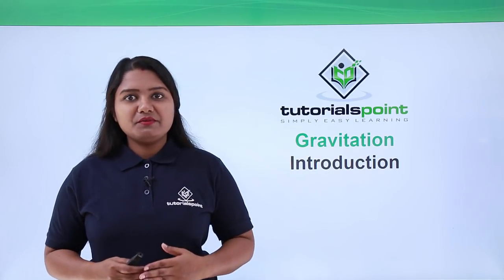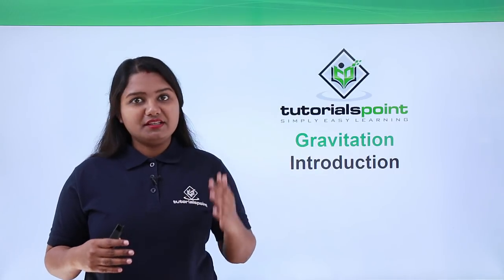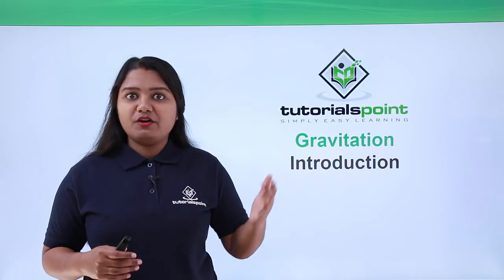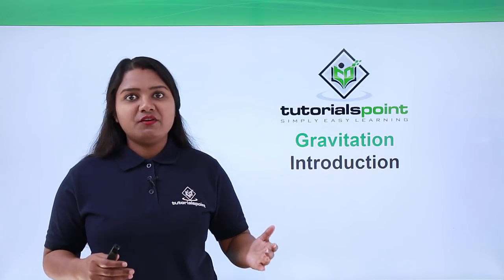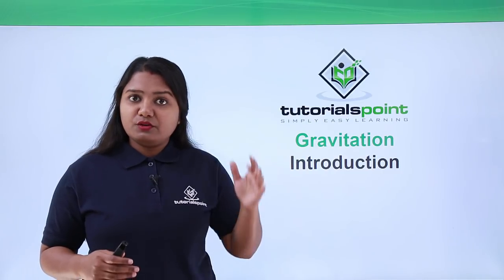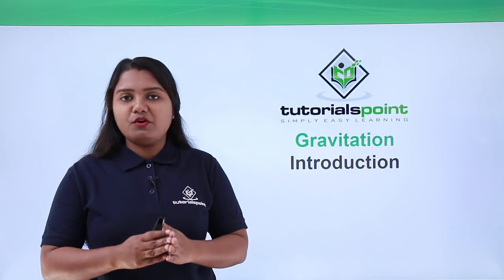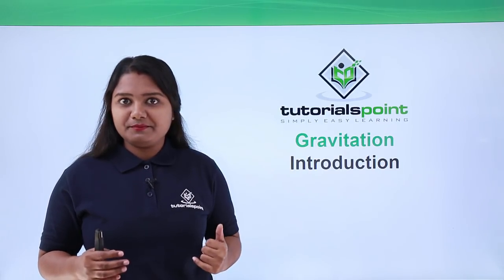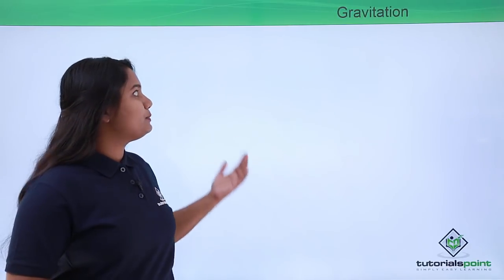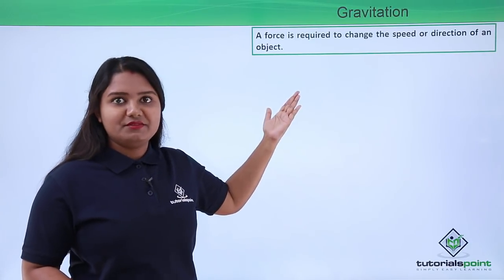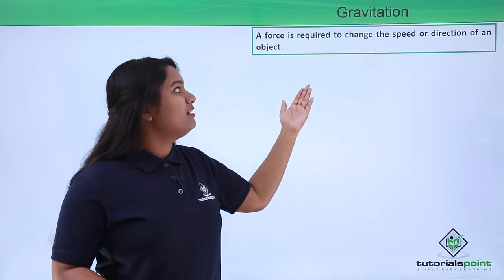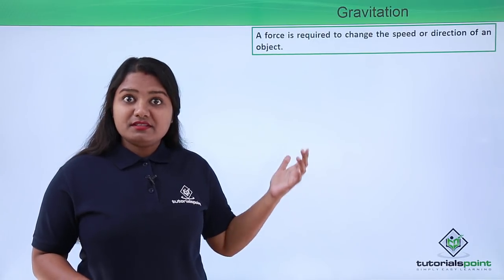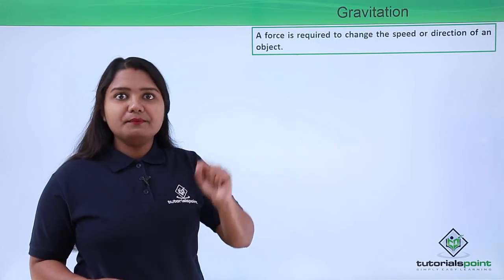In the previous chapter, which was force and laws of motion, we came to the conclusion that the reason or cause behind an object moving is a force or an externally applied force. Force is what makes a body move, can bring a moving body to rest, and can also change the speed or direction of a moving object.